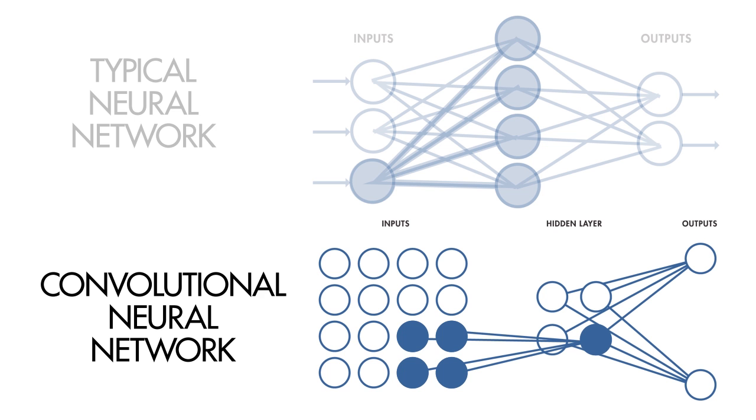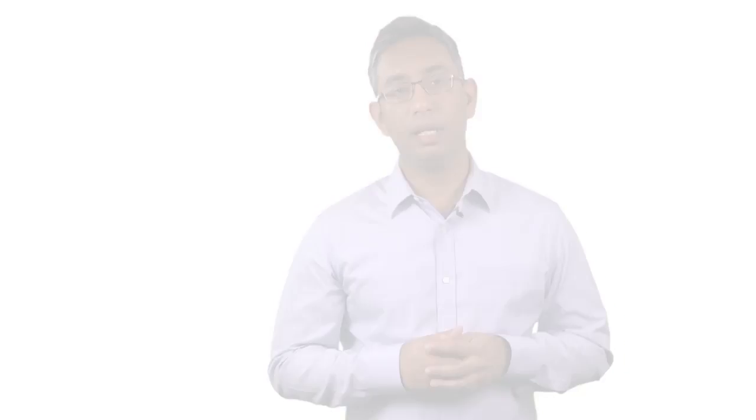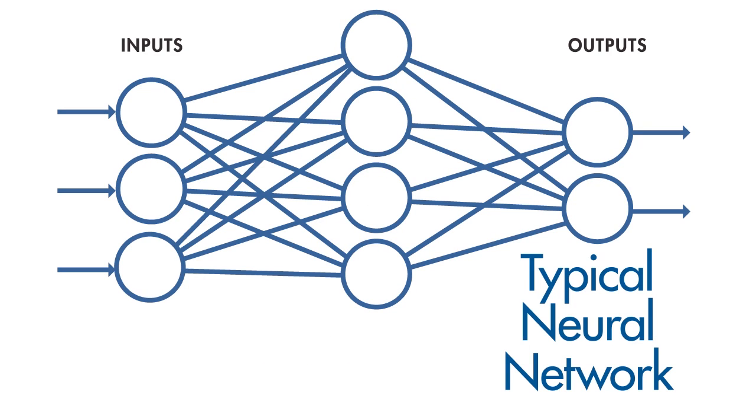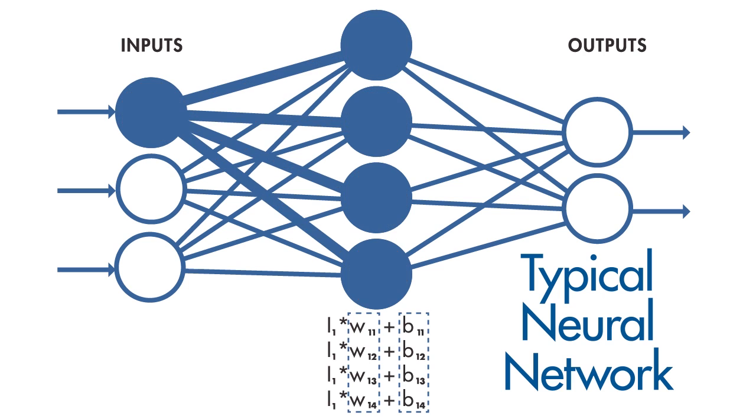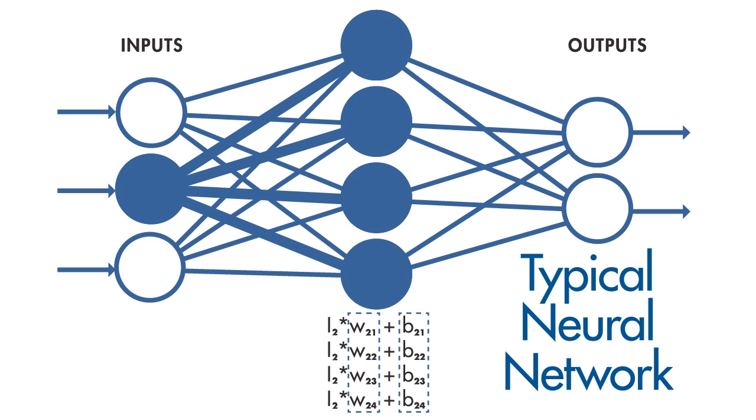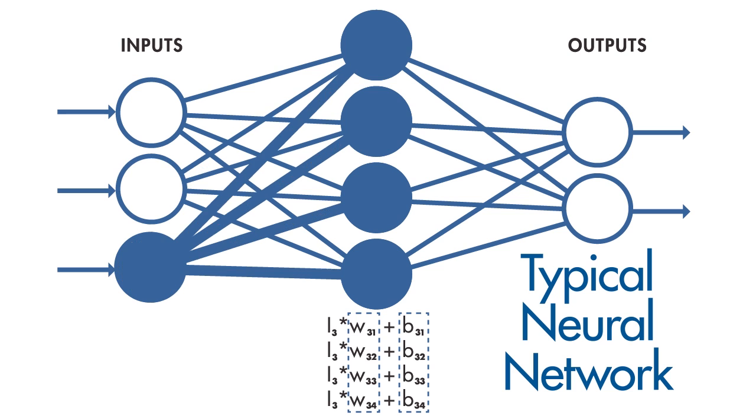The second concept we'll discuss is about shared weights and biases. Like a typical neural network, a CNN has neurons with weights and biases. The model learns these values during the training process and continuously updates them with each new training example.